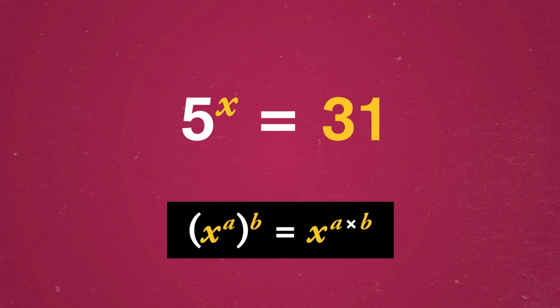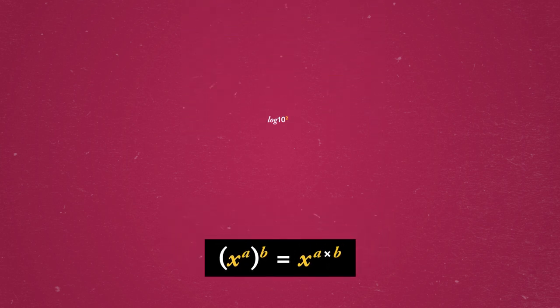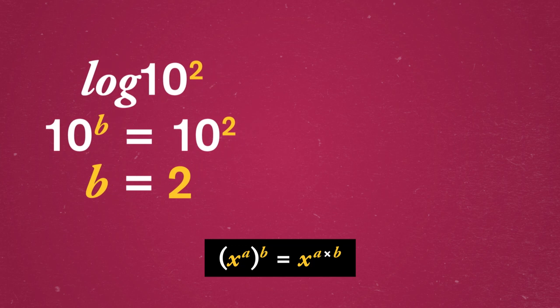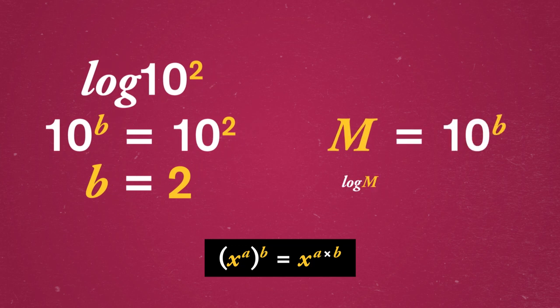So, to work with this problem, let's remember the exponent rule about stacking powers and use some logarithms. If we had log of 10 squared, we're asking what power should we raise 10 to in order to get to 10 squared? And that's 2. So, in general, if m equals 10 to the b, then log of m is b. We keep all the same pieces, we're just using a different way to say the same thing.